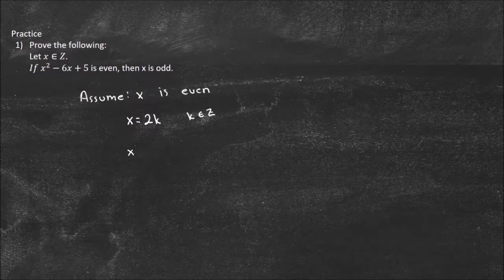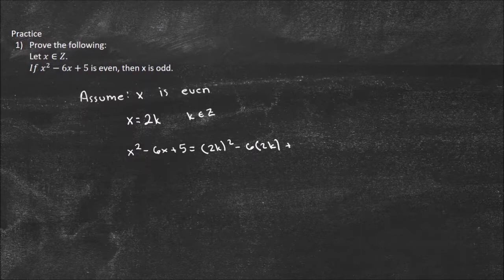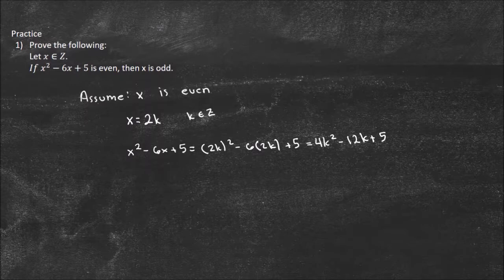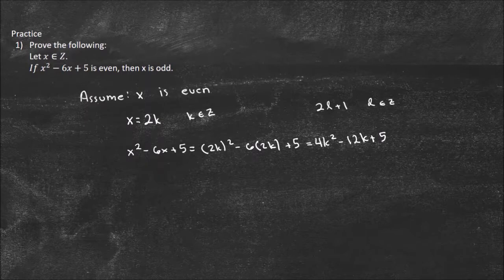So, not P means that X squared minus 6X plus 5 is odd — that's what I want to get to. So I'm just going to rewrite X squared minus 6X plus 5 and plug in 2K. So I get (2K) squared minus 6 times 2K plus 5, which simplifies to 4K squared minus 12K plus 5. Remember, our goal is to show that this is odd — meaning we want to show it equals 2L plus 1, where L is some integer. I recommend you pause and really try to see yourself how you can make this look more like 2K plus 1.